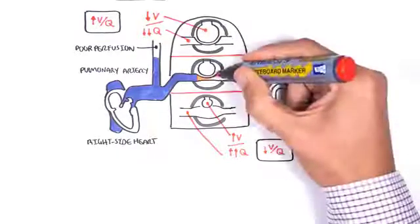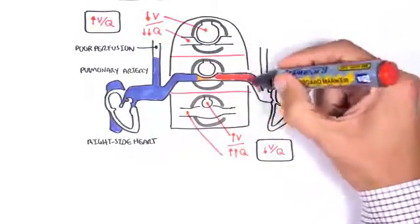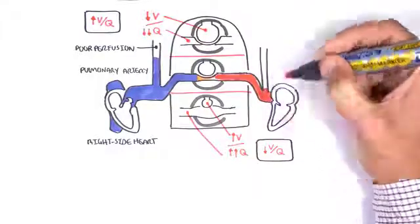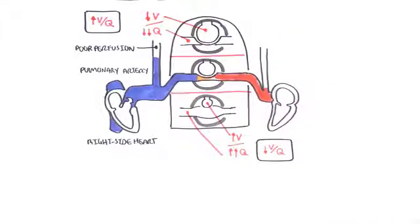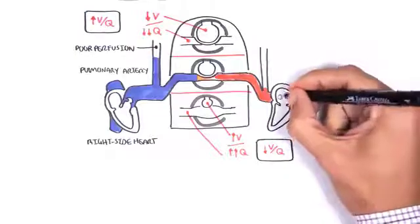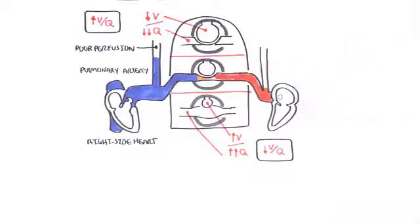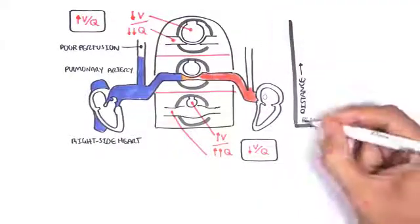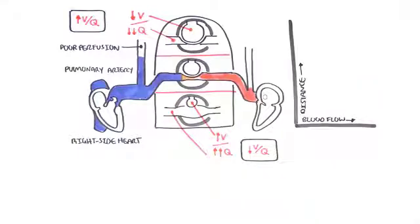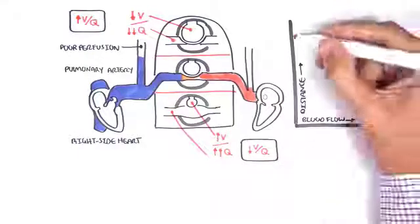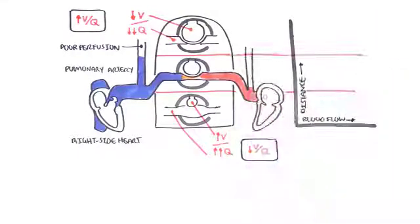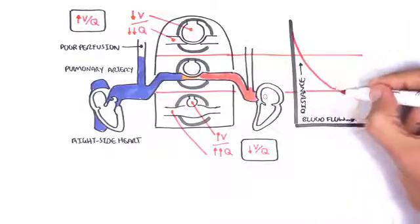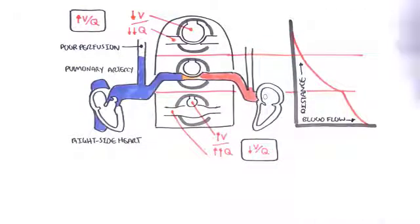One more thing to mention about venous return to the left side of the heart: the waterfall effect, whereby height does not actually influence blood flow. Looking at an example — distance or height towards the apex and blood flow — we would assume blood flow coming from the apex would be highest. But just like a waterfall, the height of the waterfall has no influence on the rate of flow.